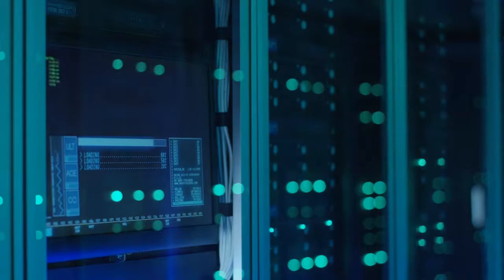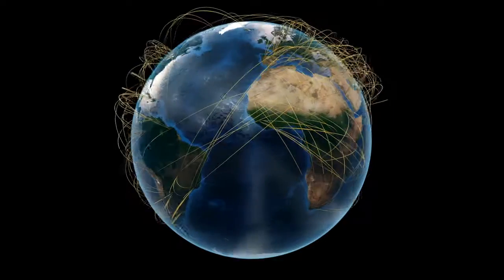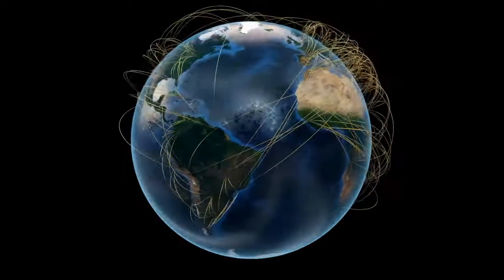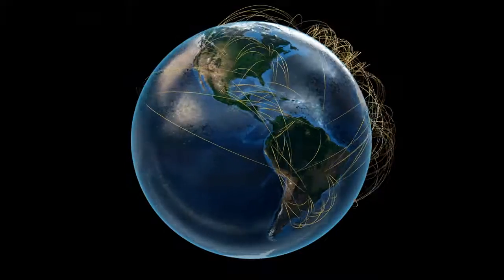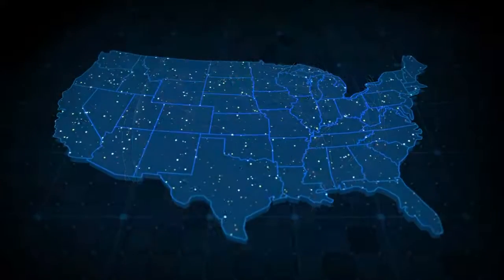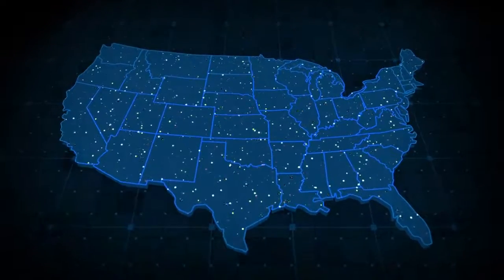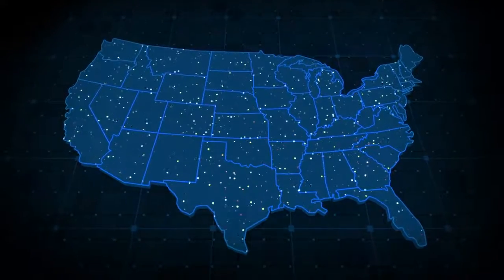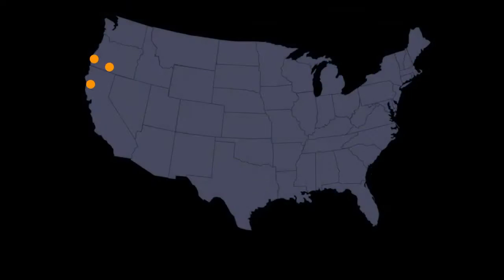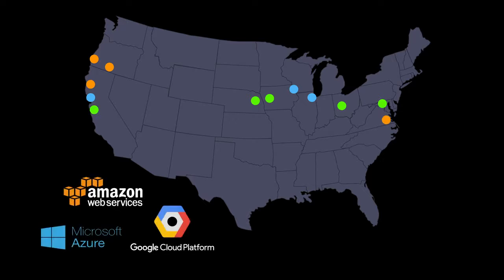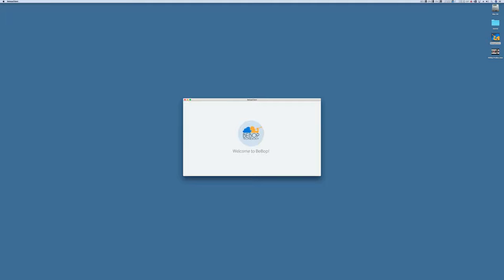Bebop takes advantage of data centers all around the world and provisions virtual machines and storage in these data centers, so there's one near you. This proximity is key — the closer you are to a data center, the better your creative experience will be. Bebop runs in the three big cloud service providers: Amazon, Google, and Microsoft Azure.